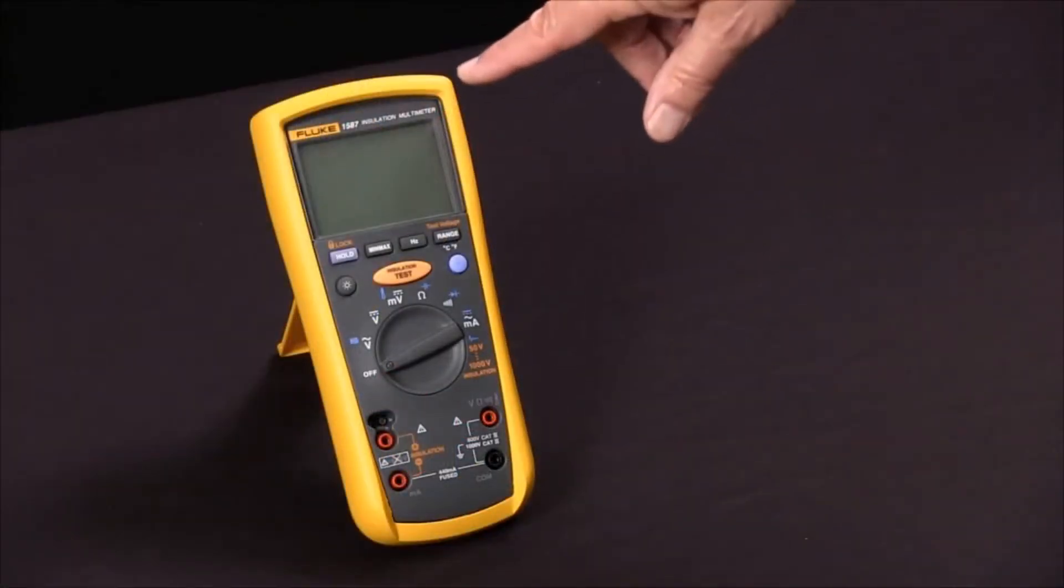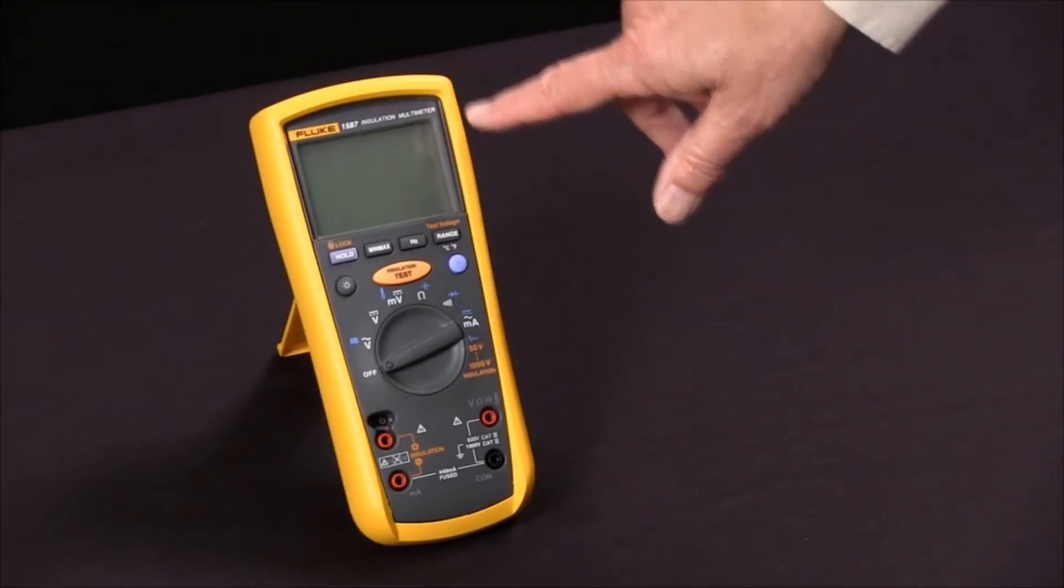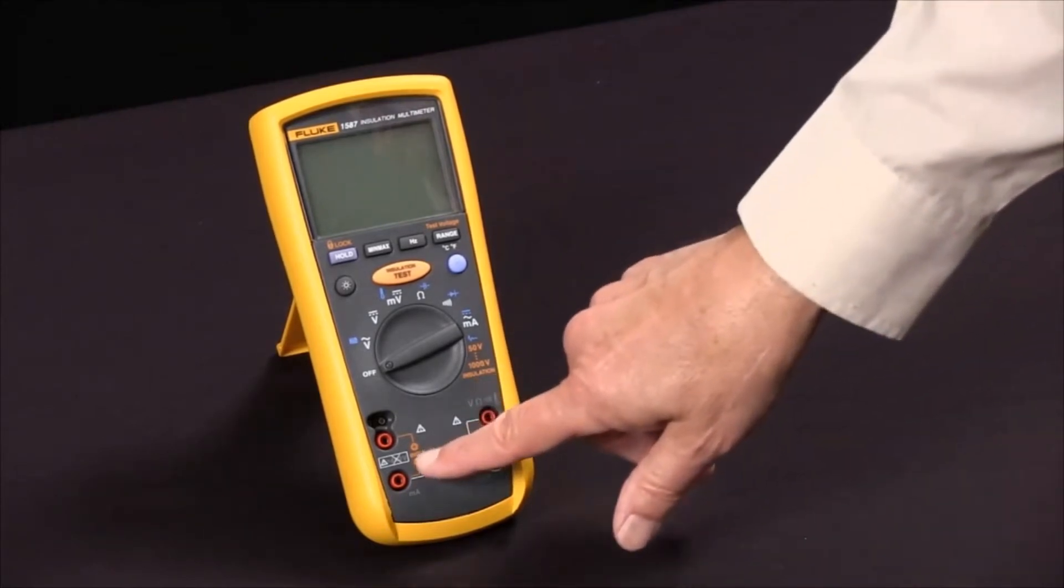To measure insulation resistance with our Fluke 1587 Insulation Multimeter, we first notice that the functions that relate to insulation resistance are all in orange.